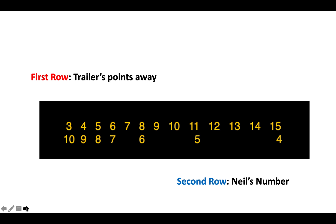We have two rows of numbers. The first row tells you the trailer's points away from winning — am I three away from winning the match, four away, five away, and so on. Underneath that, we have the corresponding Neil's number. So if I was three away from winning the match, Neil's number for that would be 10.